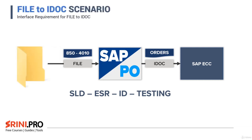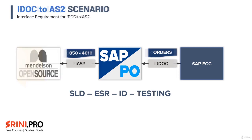Next, we will replace the Mendelssohn AS2 with a file adapter, wherein we will drop the EDI file in an FTP folder and use the same interface to pick the file and process the message into an IDOC. In the IDOC to AS2 scenario, we will trigger an orders IDOC from SAP ECC, convert it into an 850 4010 EDI file, and send the file to the Mac AS2 software. You will learn how to configure the Mendelssohn software to receive the message and how to configure your channel to send that message. The configuration will cover SLD, ESR, ID, and end-to-end testing from ECC to Mendelssohn software.